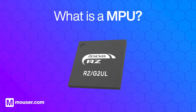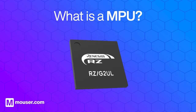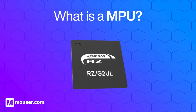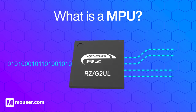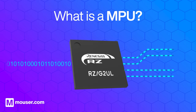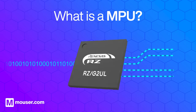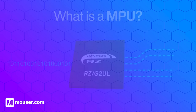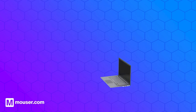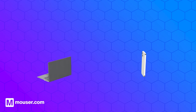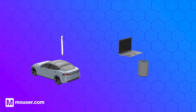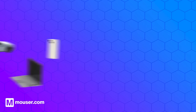A microprocessor unit, also known as an MPU, is the central processing unit of a computer or computing device. It processes information, decides actions, and interprets signals. MPUs can be found in many devices ranging from computers and smartphones to embedded systems in cars and appliances.